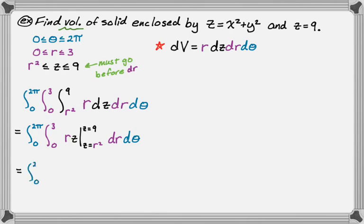So I'm going to end up with 0 to 2 pi, 0 to 3, r times, you plug in 9, and then you subtract plugging in r squared. So we get just the quantity 9 minus r squared. And then still a dr, still a d theta.